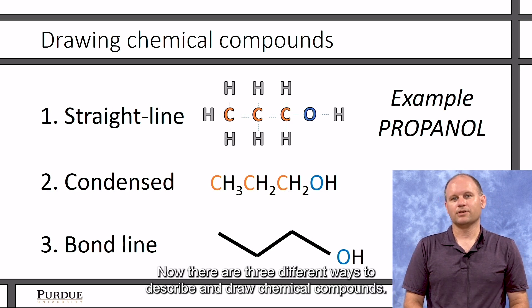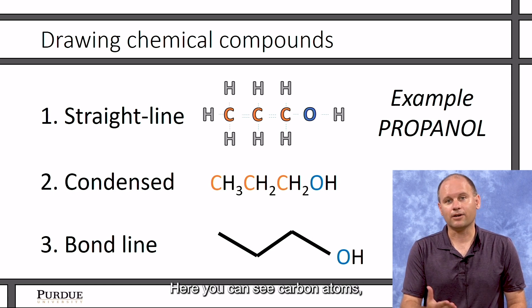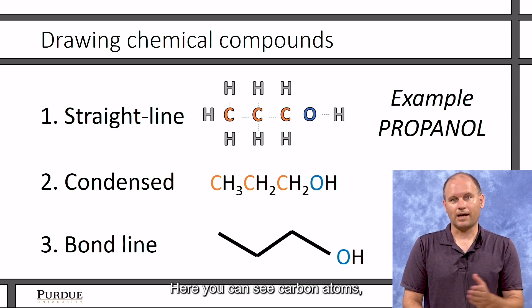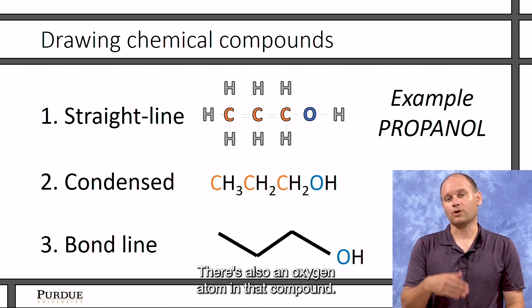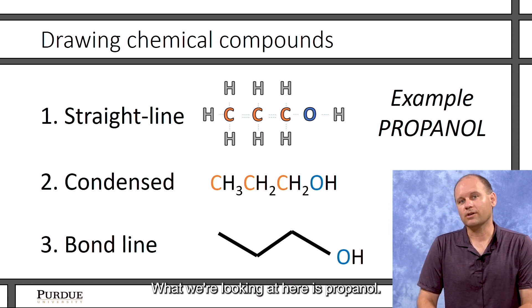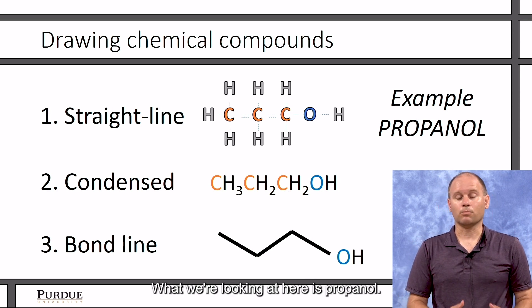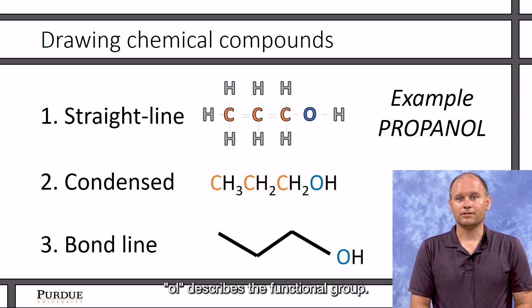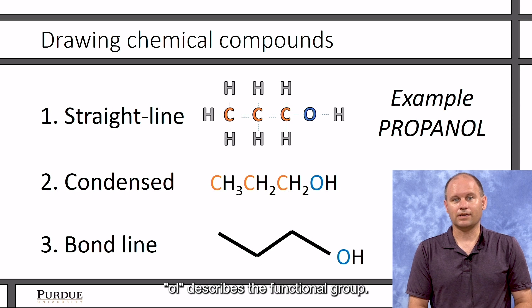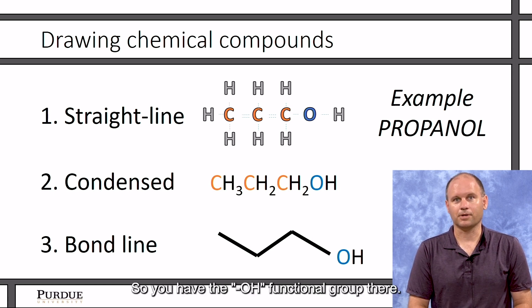Now there are three different ways to describe and draw chemical compounds. The first is the straight line format, and here you can see carbon atoms, hydrogen atoms, and the bonds between these atoms. There's also an oxygen atom in that compound. What we're looking at here is propanol. So prop is the prefix—it has three carbon atoms. Ol is the functional group. It's an alcohol, so you have the OH functional group there.